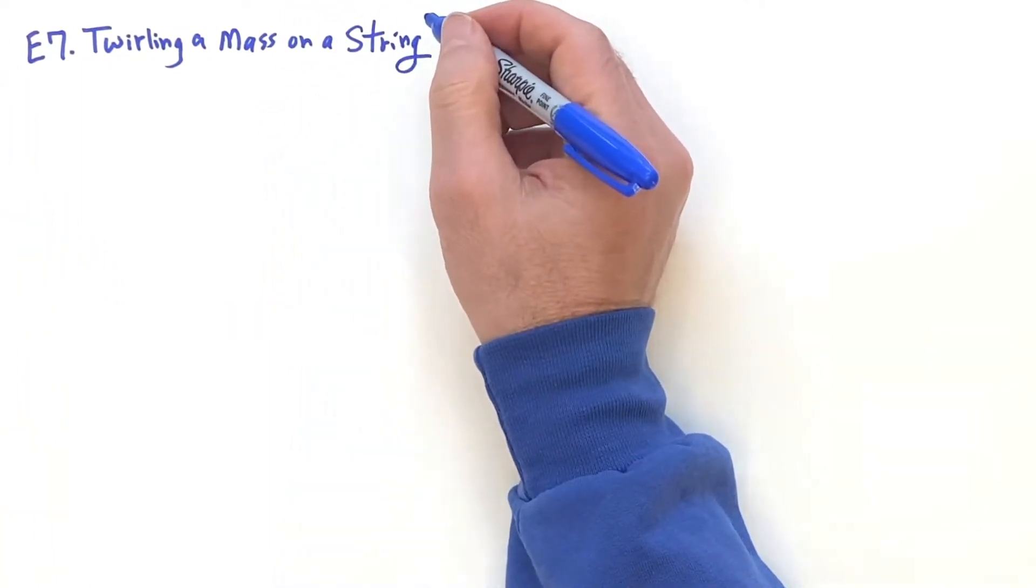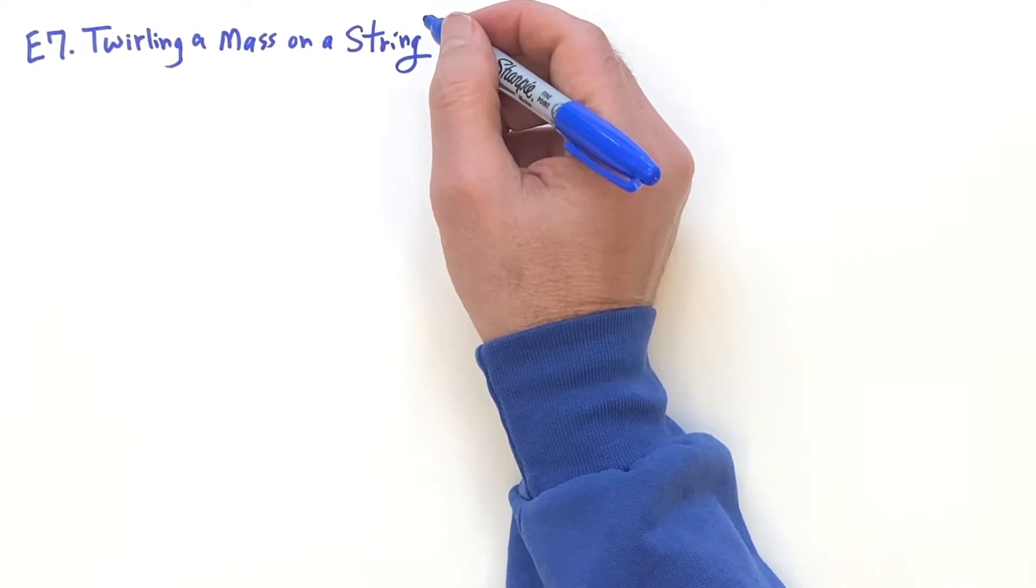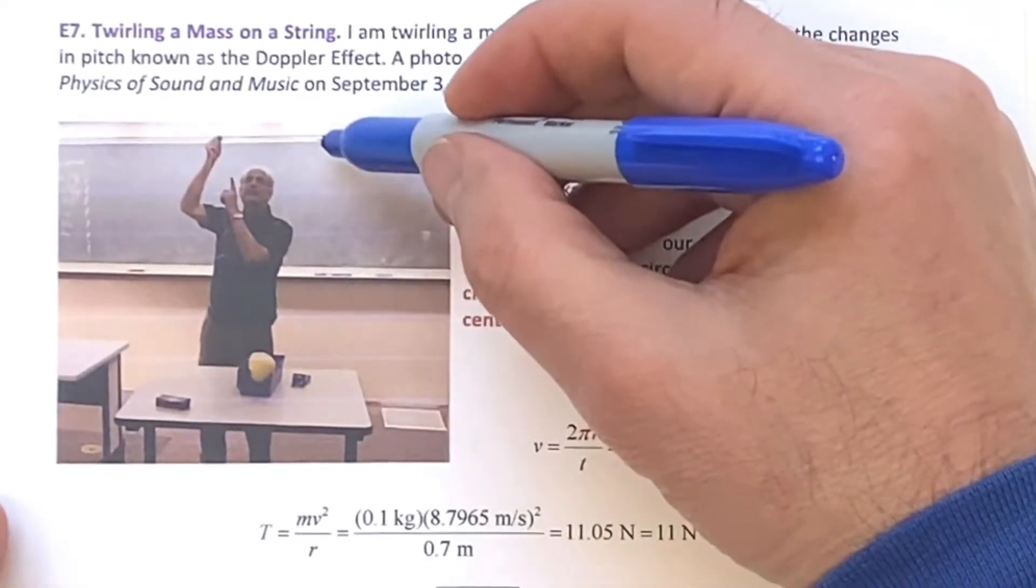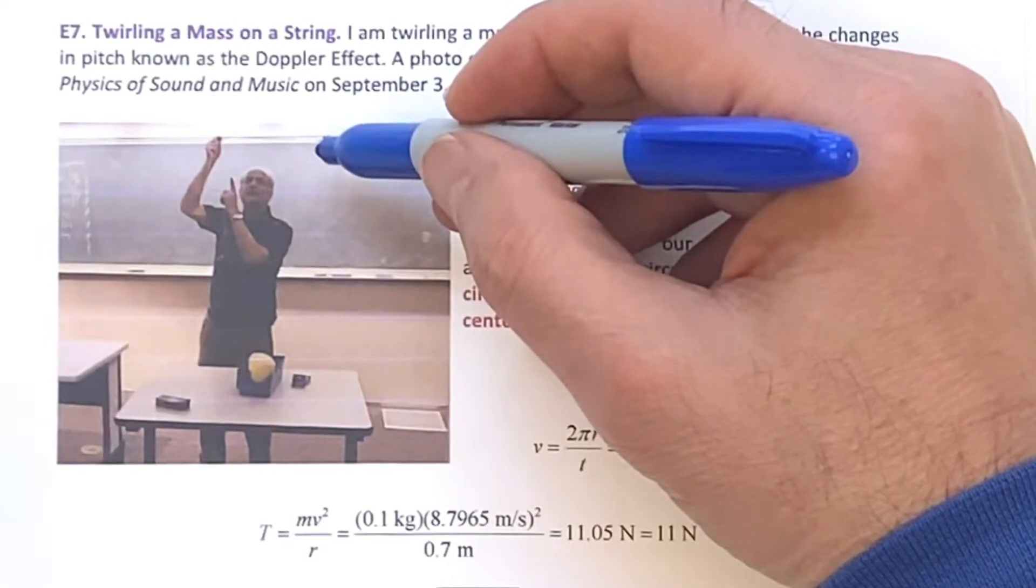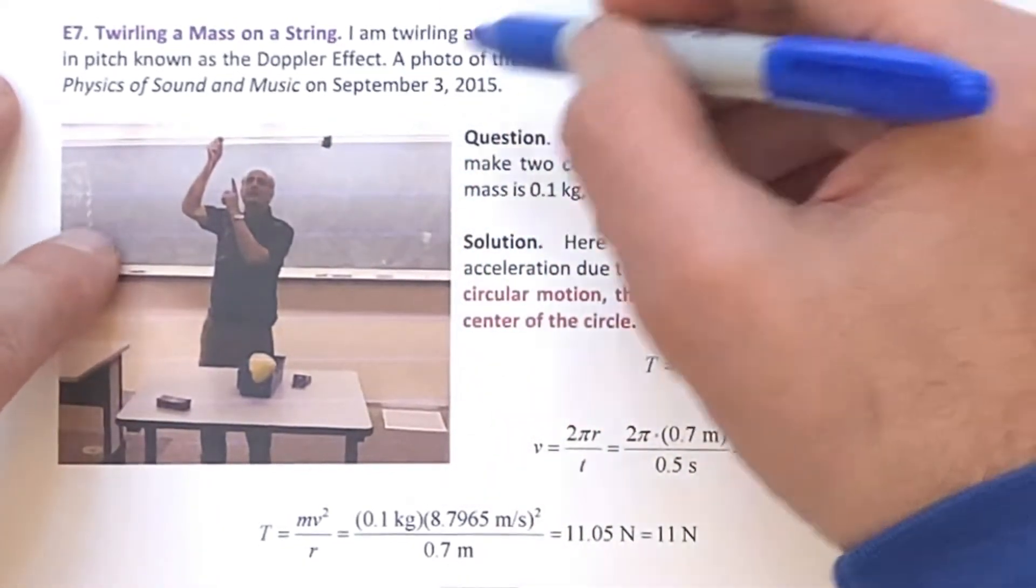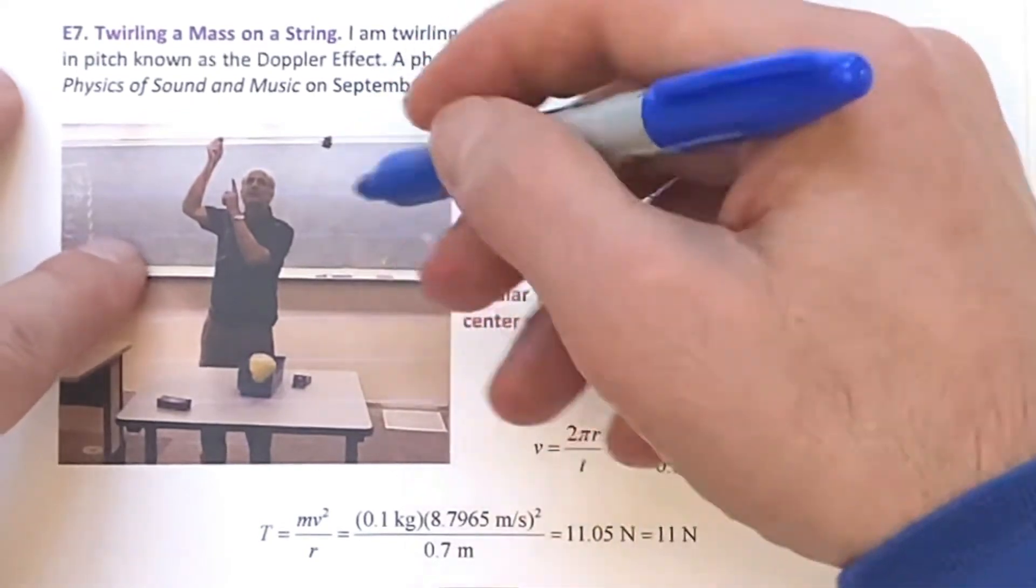I was trying to find something online that was copyright free on this. I couldn't really find anything, but I found that I did it in class with a little mass that made a sound that was demonstrating the Doppler effect. So I was swinging this in class, so we'll use this as the given problem.